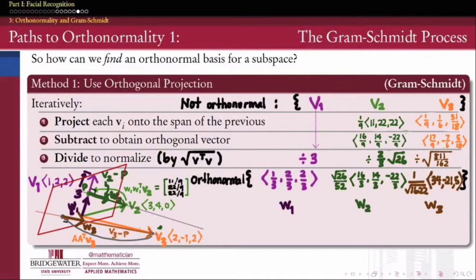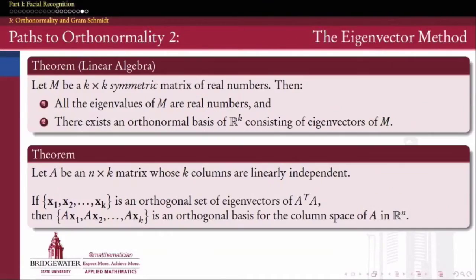Let's look at a second process, besides Gram-Schmidt, that may, depending on your situation, be a little friendlier to use to determine an orthonormal basis for a subspace. It's called the eigenvector method, and it relies on two facts from linear algebra.